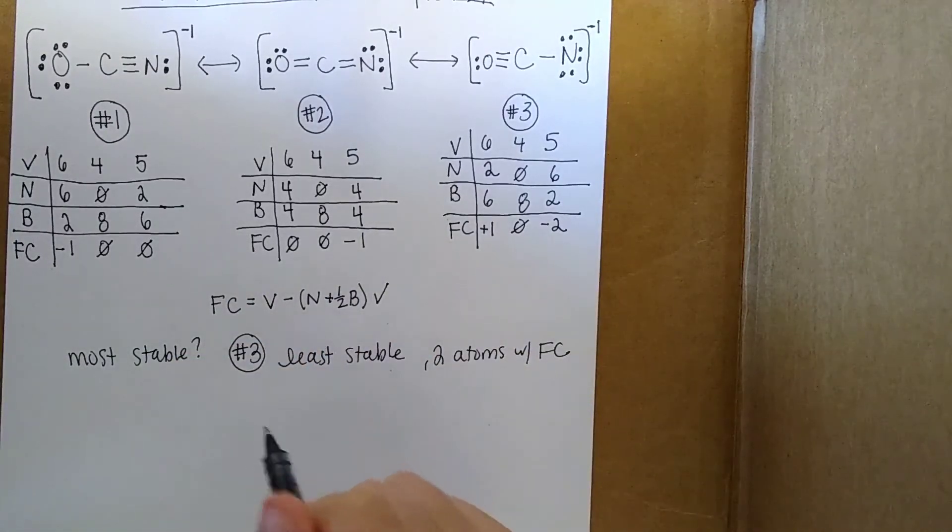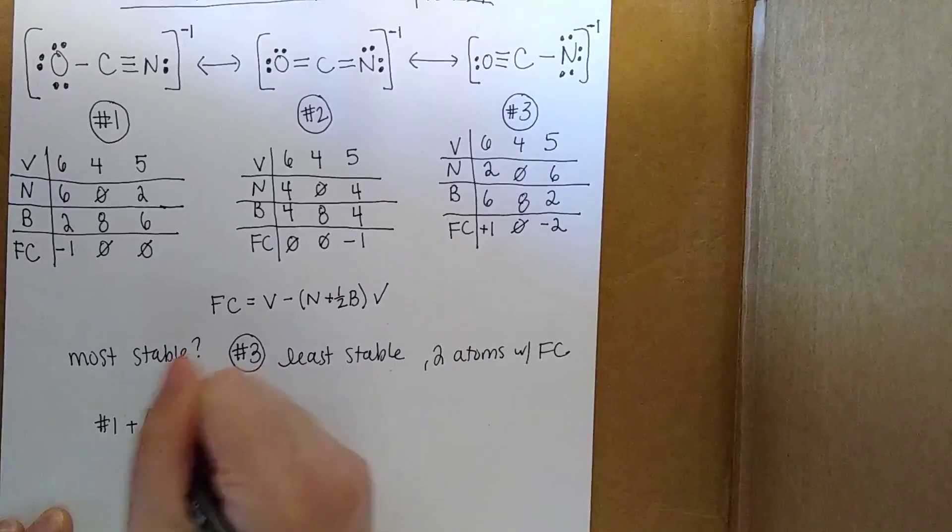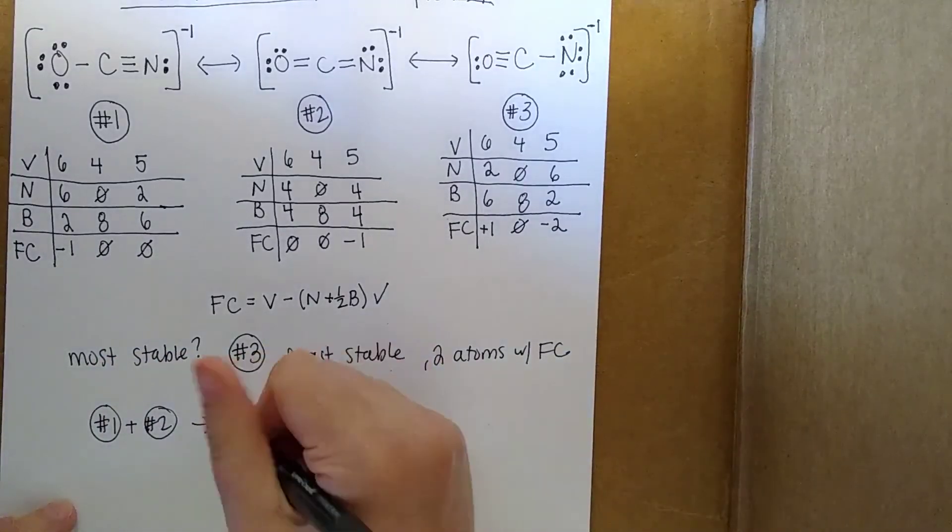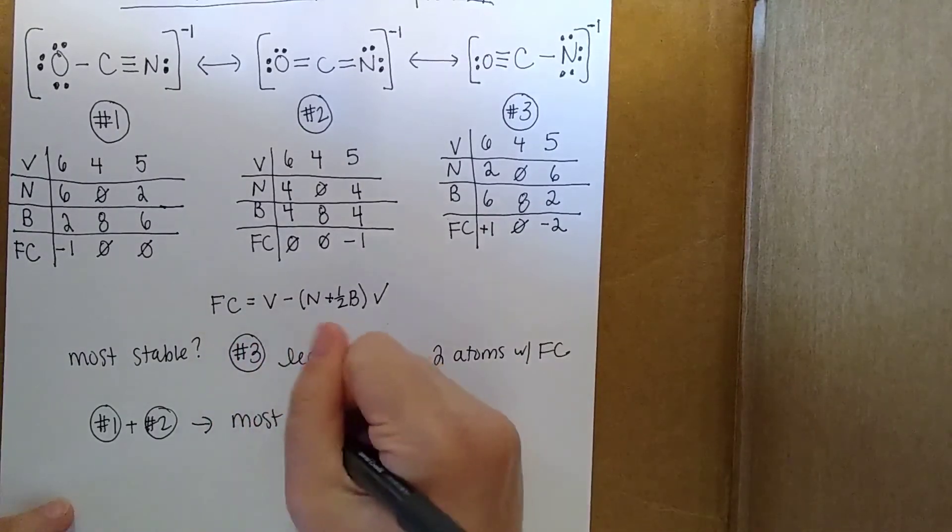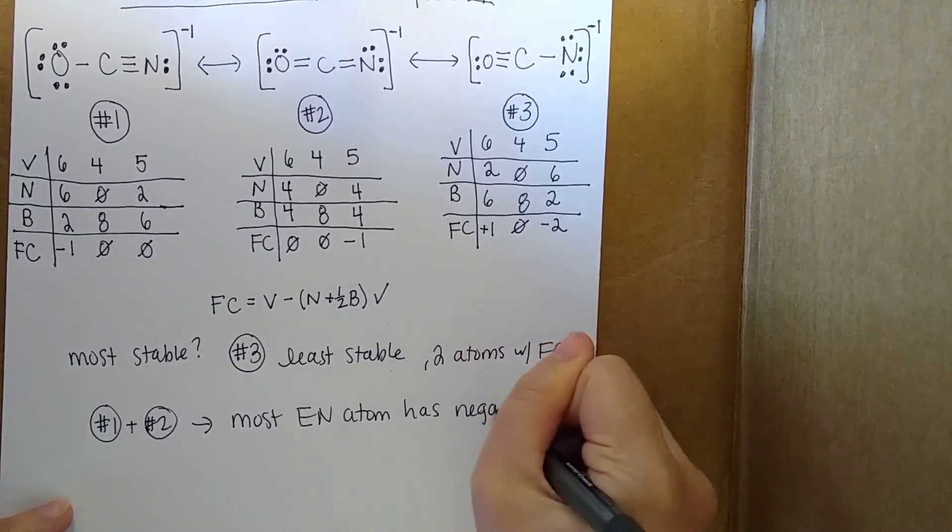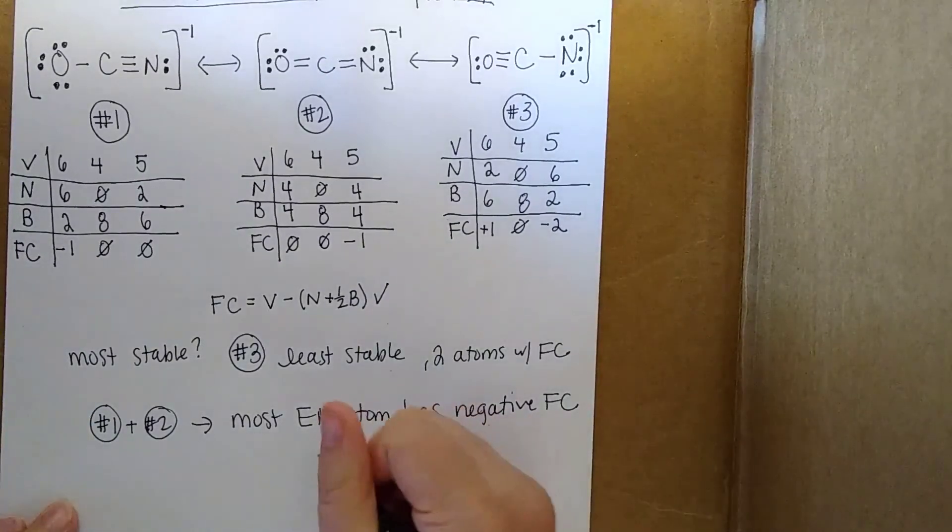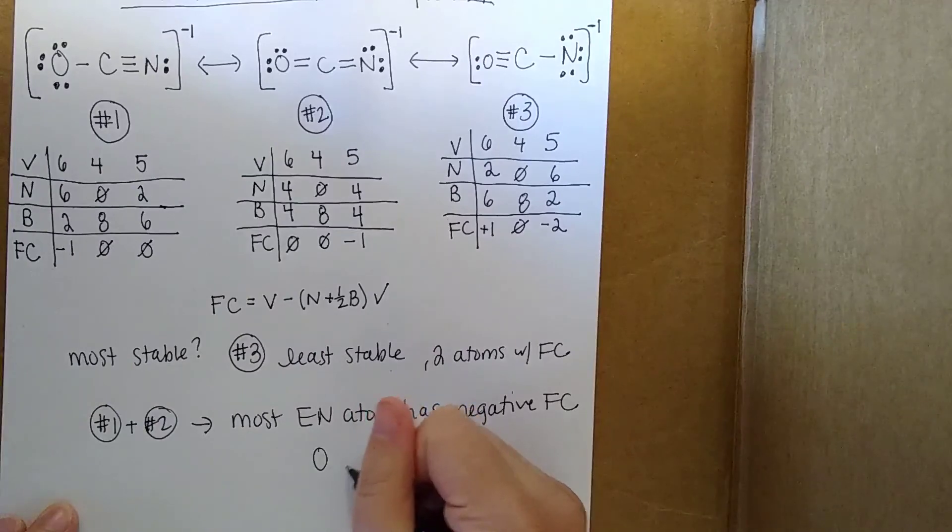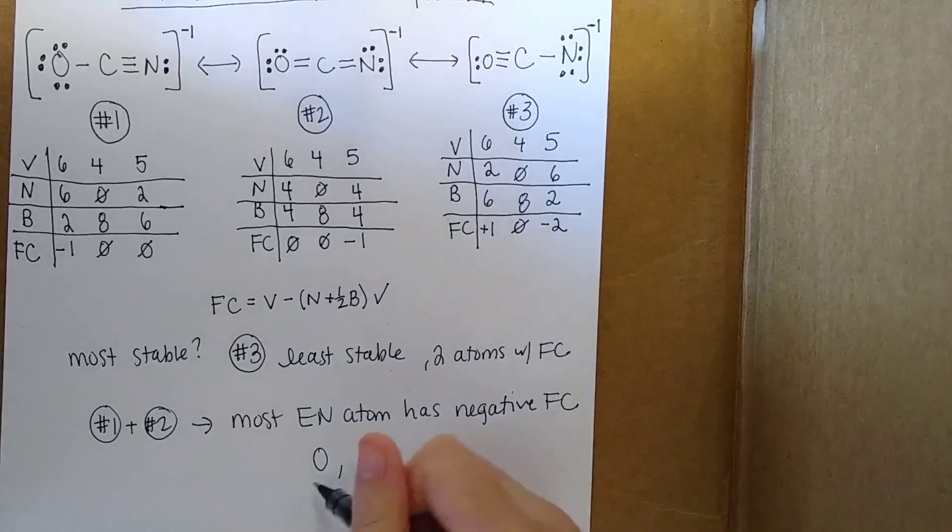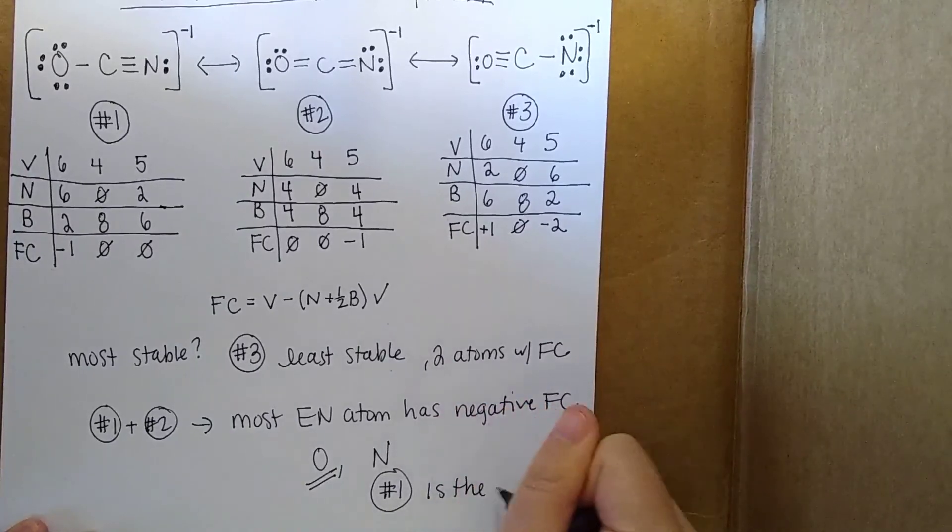We know number 3 is not the most stable. Between number 1 and number 2, we have to decide which is most stable. Remember our next rule, that the most electronegative atom has the negative formal charge. We have to decide if oxygen is more electronegative or if nitrogen is more electronegative. We know from our periodic trends that the answer is oxygen. This implies that structure number 1 is the best.